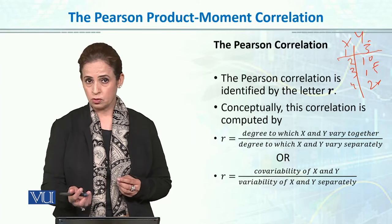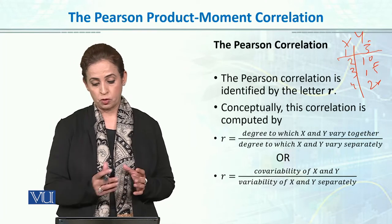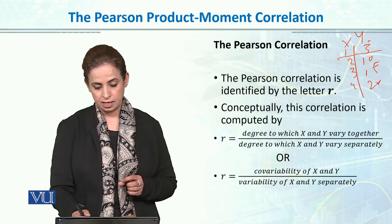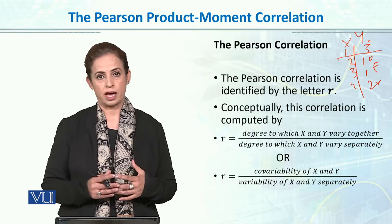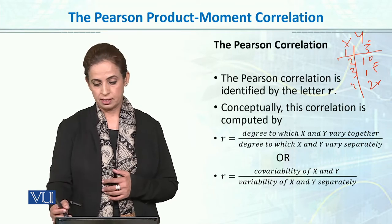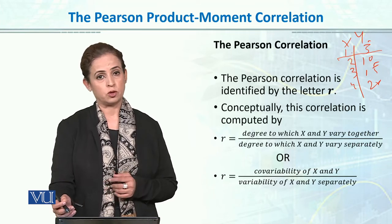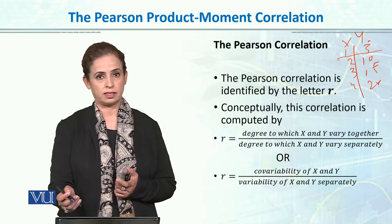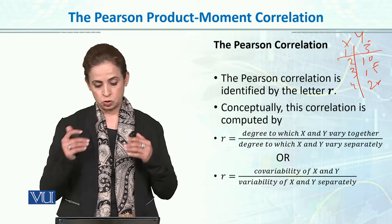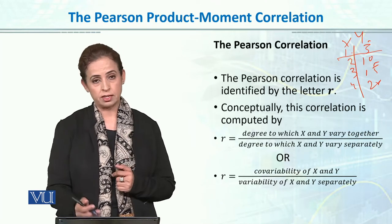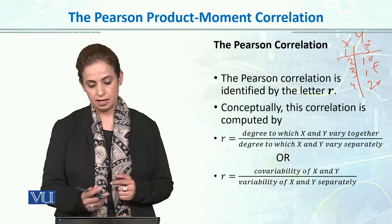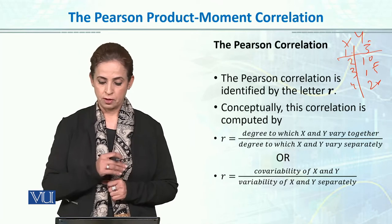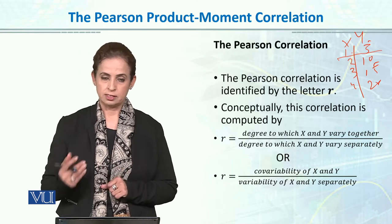So the correlation formula calculates the degree to which x and y vary together. So if x is 1, then y is 5; x is 2, then y is 10 — how they are varying together — and then divided by the degree to which x and y vary separately.